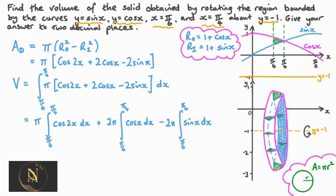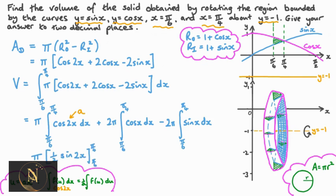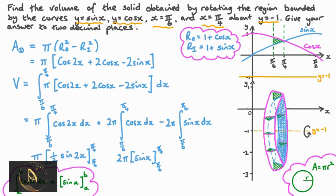By the additive property of integrals, we split our integral into three terms, taking constant factors of pi and 2 pi out front. For the first integral, using the substitution u equals 2x with a equals 2, we get pi times one-half times sine 2x, evaluated between pi by 6 and pi by 4. The second integral is 2 pi times sine x evaluated between pi over 4 and pi over 6. The third integral uses the fact that the integral of sine x is negative cosine x, giving negative 2 pi times negative cosine x, evaluated between pi over 4 and pi over 6.